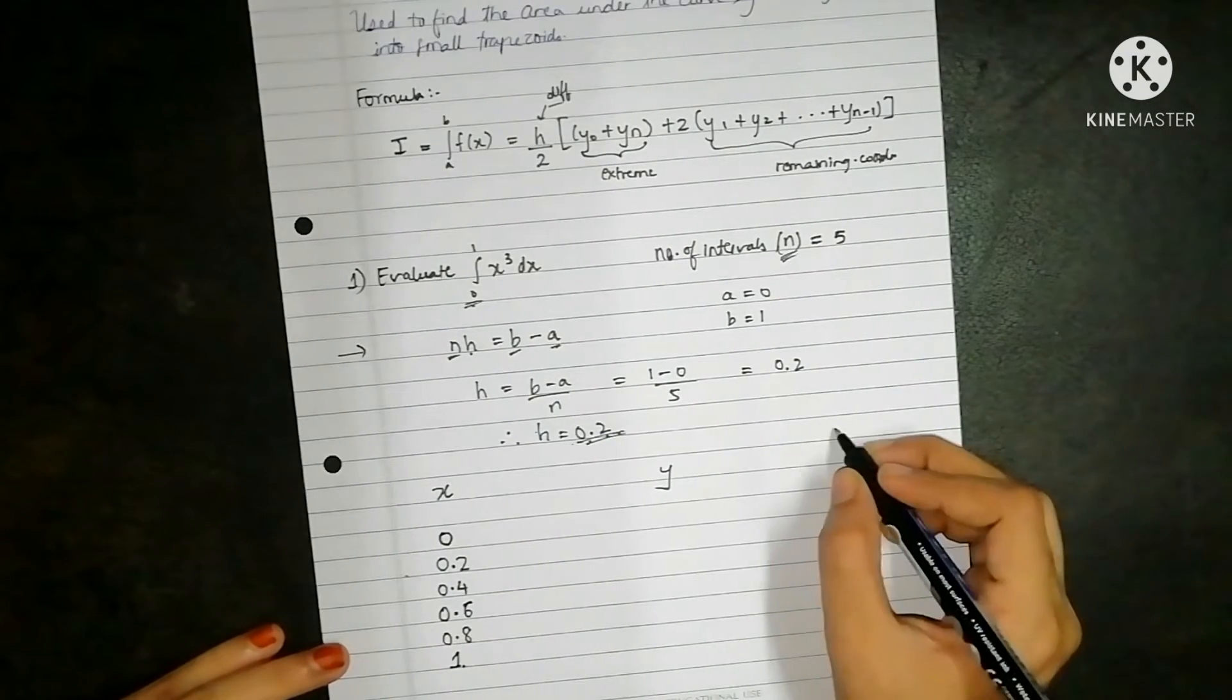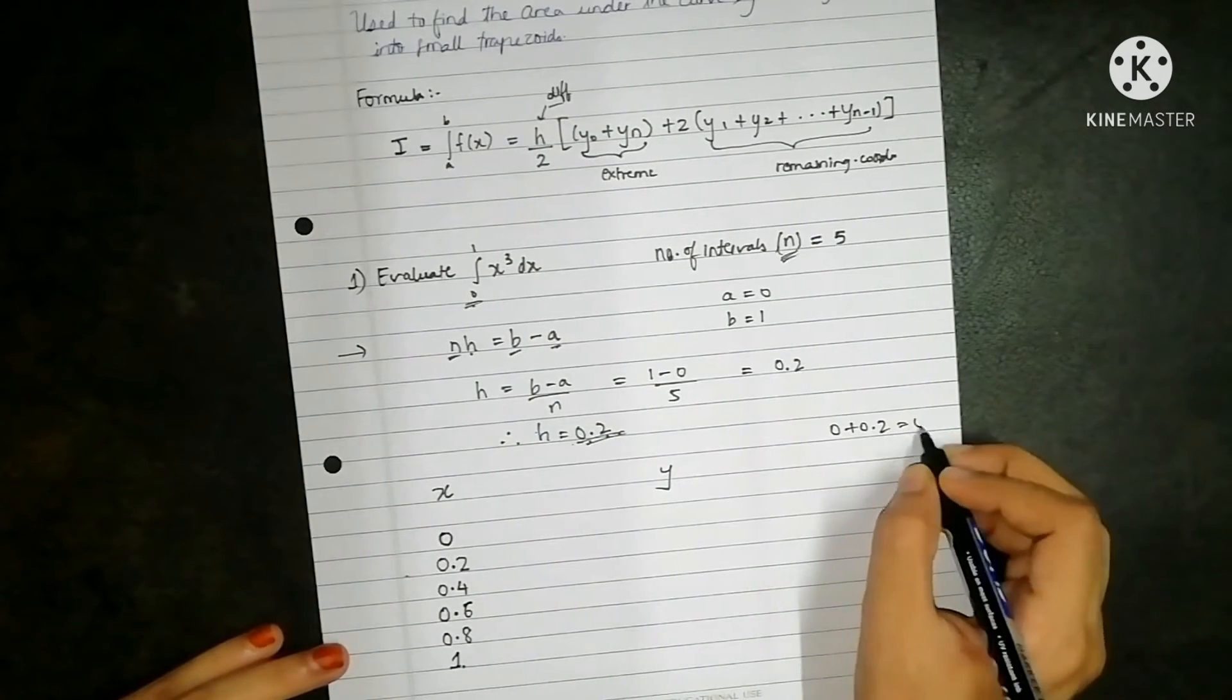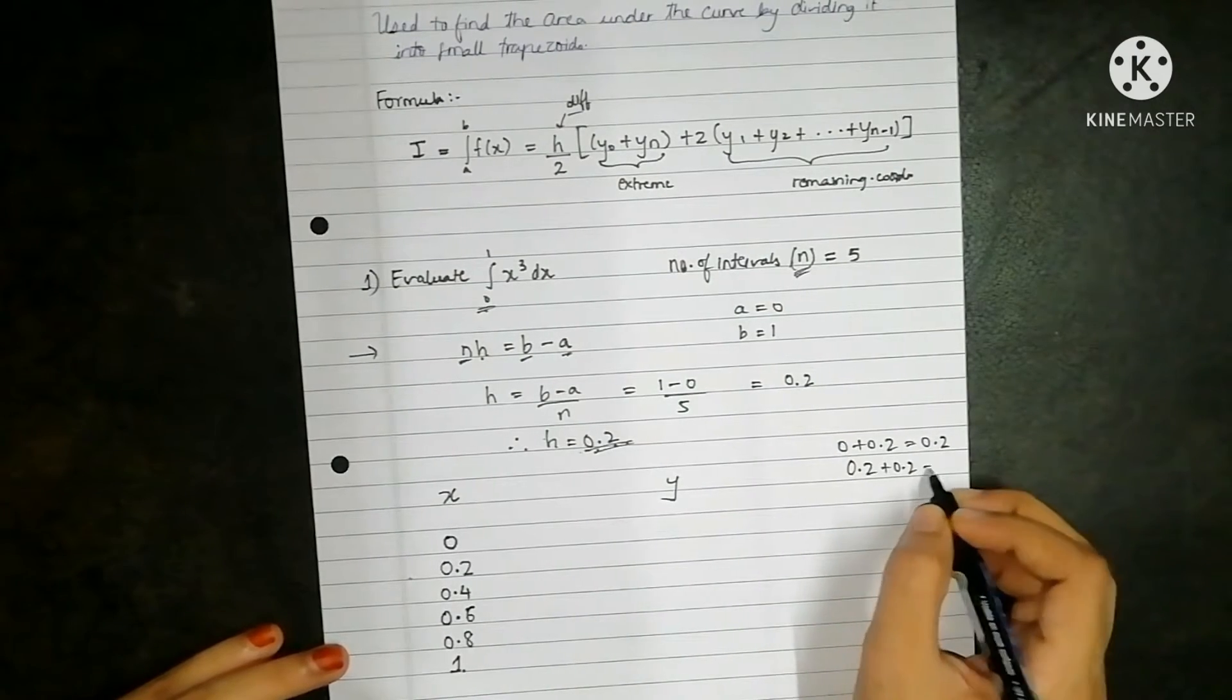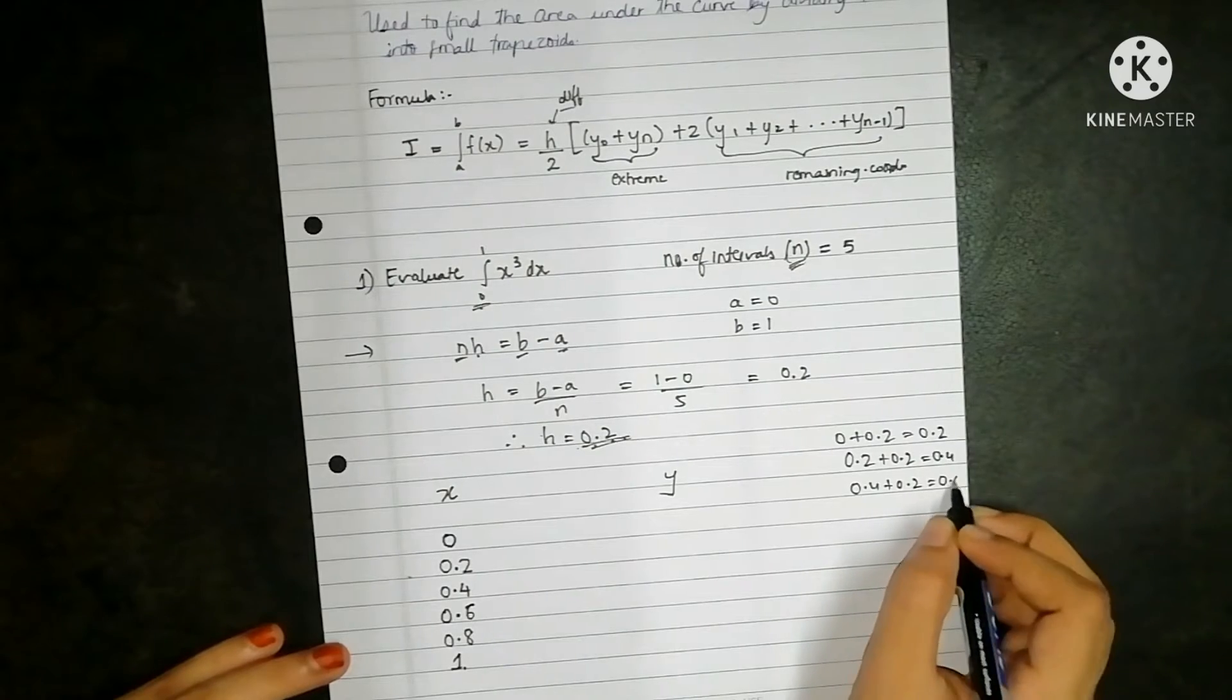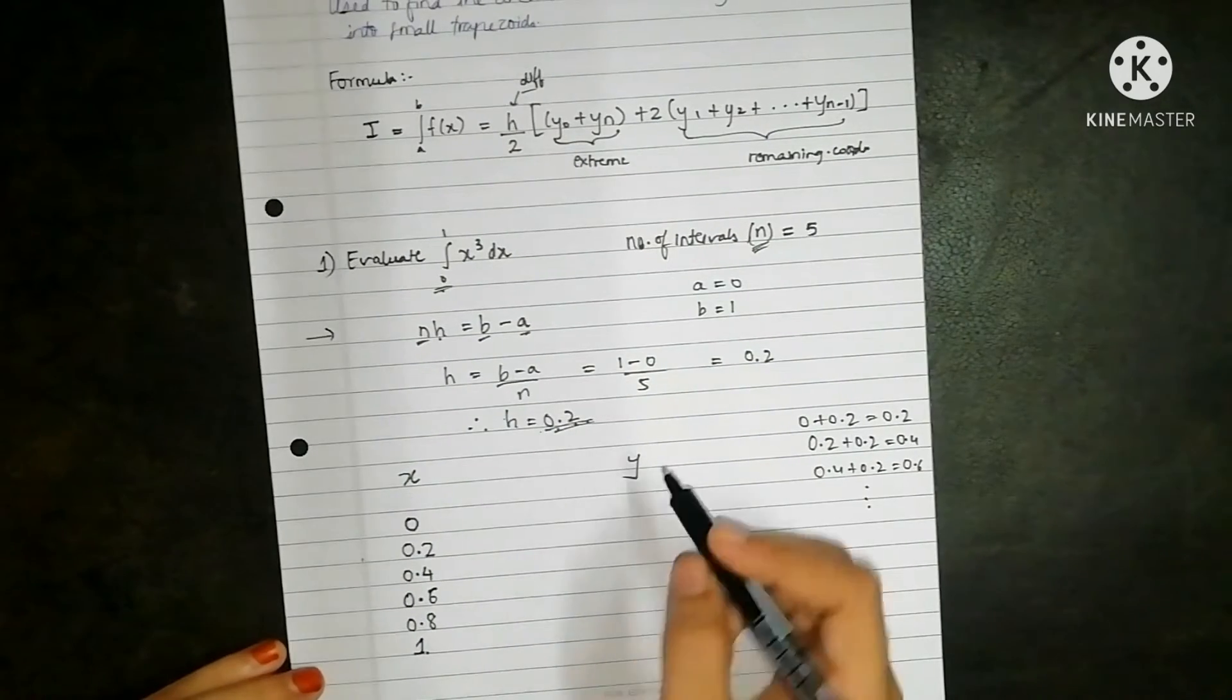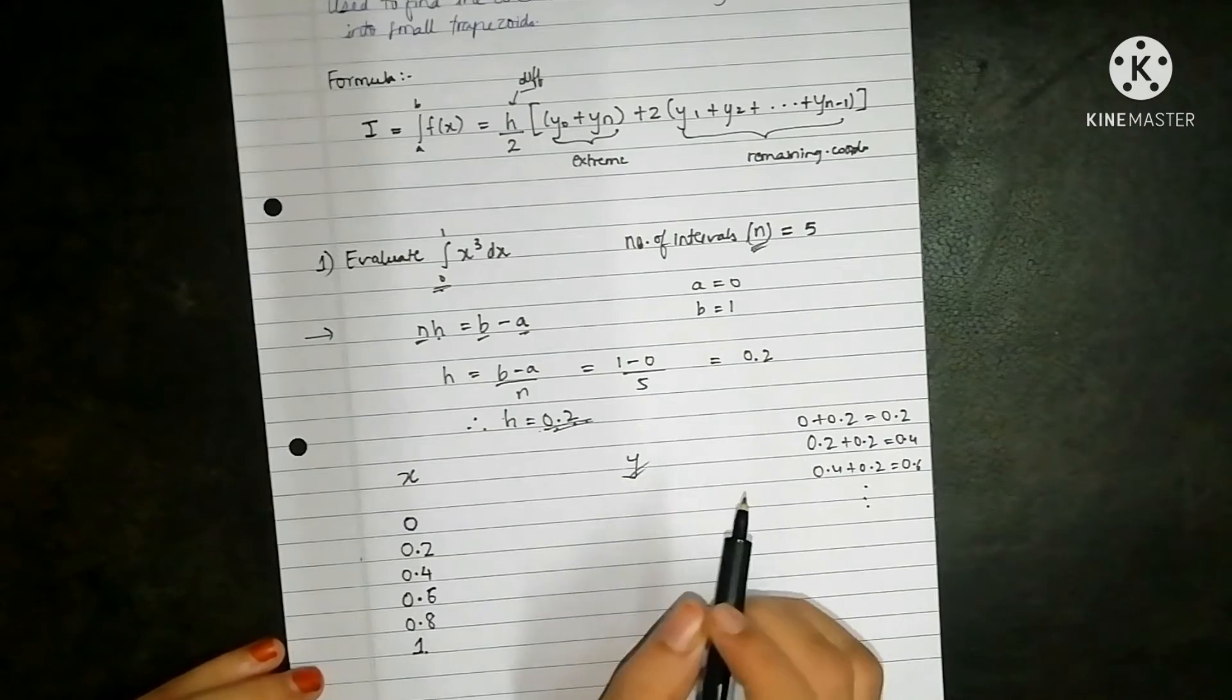You can also do this as 0 plus 0.2 that is 0.2, then 0.2 plus 0.2 is 0.4, 0.4 plus 0.2 that is 0.6 and so on.